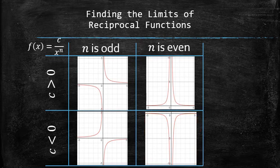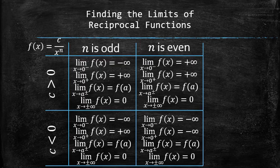As a result, at any given moment we should be able to associate any reciprocal function with the appropriate limit statement, based only on the coefficient and the degree of the denominator, as the following chart summarizes.